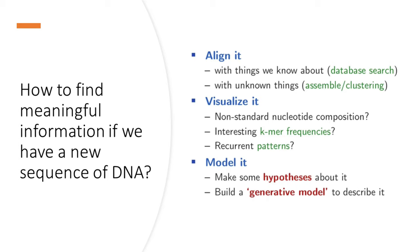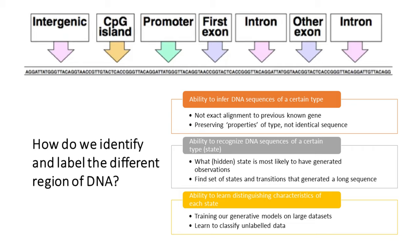Modeling refers to the situation where we make hypotheses about the sequence — for example, whether there are common ancestors for the sequence, or whether there is particular functionality associated with certain regions. By modeling, we are trying to build a generative model — a mathematical model that allows us to predict different functionalities of the DNA. Given a long sequence, different regions play different functions, such as exons, introns, promoter regions, CpG islands, and so on. A generative model will allow us to identify and annotate these regions given a new piece of unlabeled DNA.